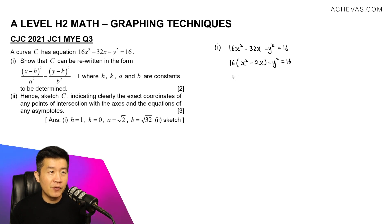And let's complete the square for this. So we will have (x - 1)² - 1² - y² = 16. Multiplying 16 in, we have 16(x - 1)² - 16 - y² = 16.